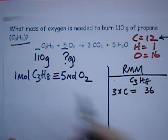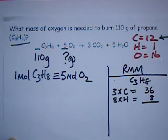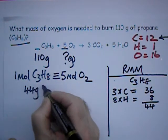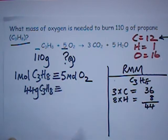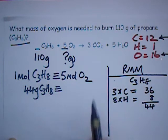And 8 hydrogens, each contributing one. So that gives us a total of 44. One mole of this chemical weighs 44 grams. One mole of oxygen, that'll be twice 16 because the formula is O2. One mole of oxygen weighs 32 grams.